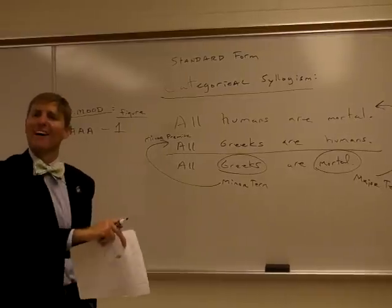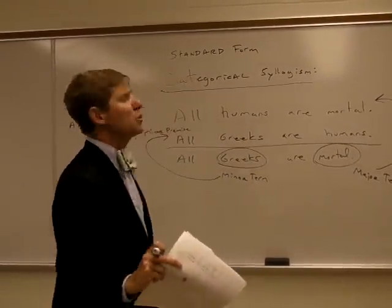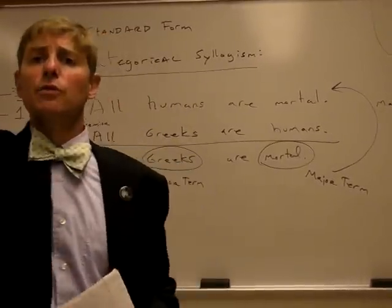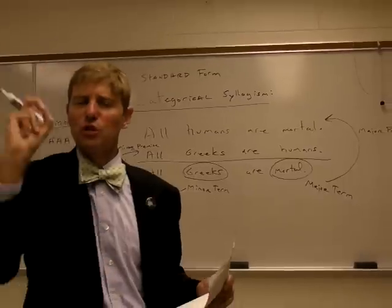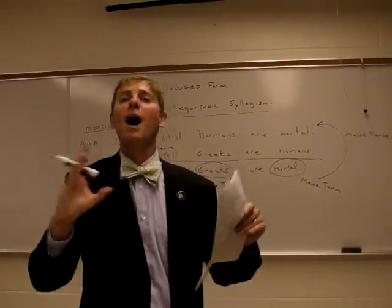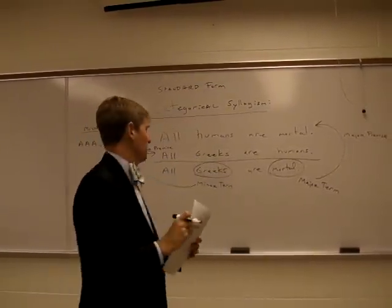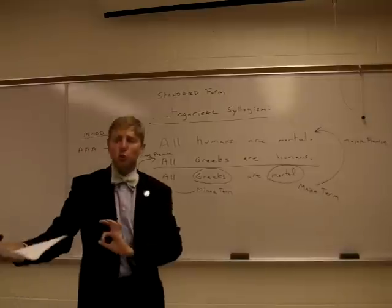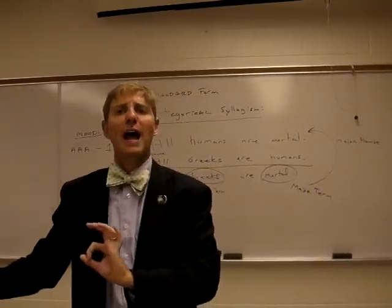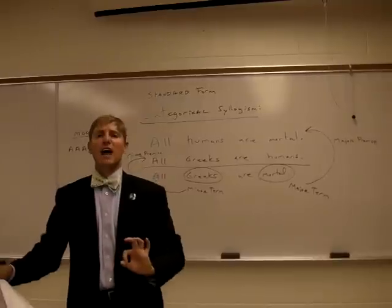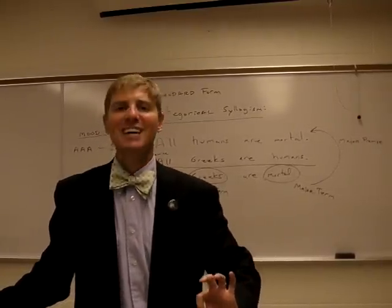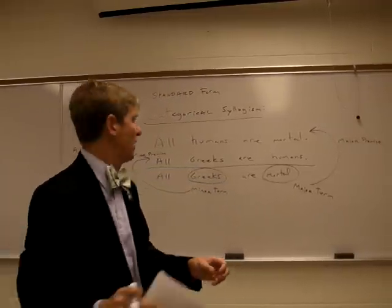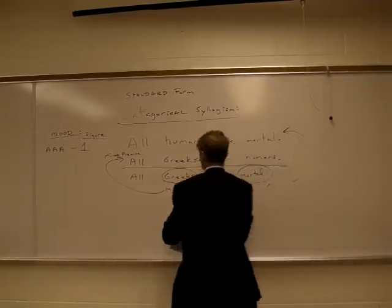Now, how do we determine whether or not this syllogism is valid? We're going to use the Venn diagram method. The Venn diagram method involves constructing three overlapping circles where each section represents a possible relationship among the three terms. We'll diagram the two premises and then read or interpret the diagram to determine if the conclusion has been diagrammed. If so, it's valid; if the conclusion has not been diagrammed, then the syllogism is invalid.